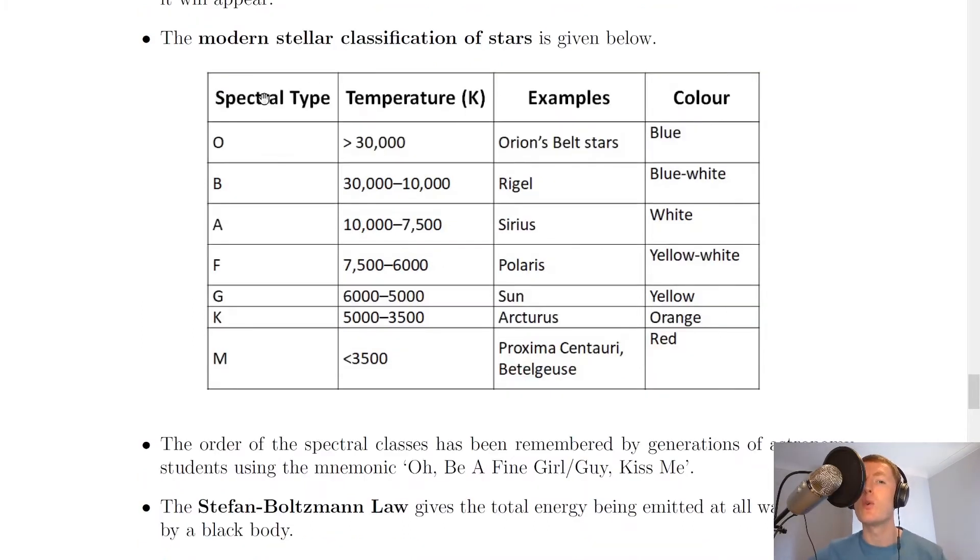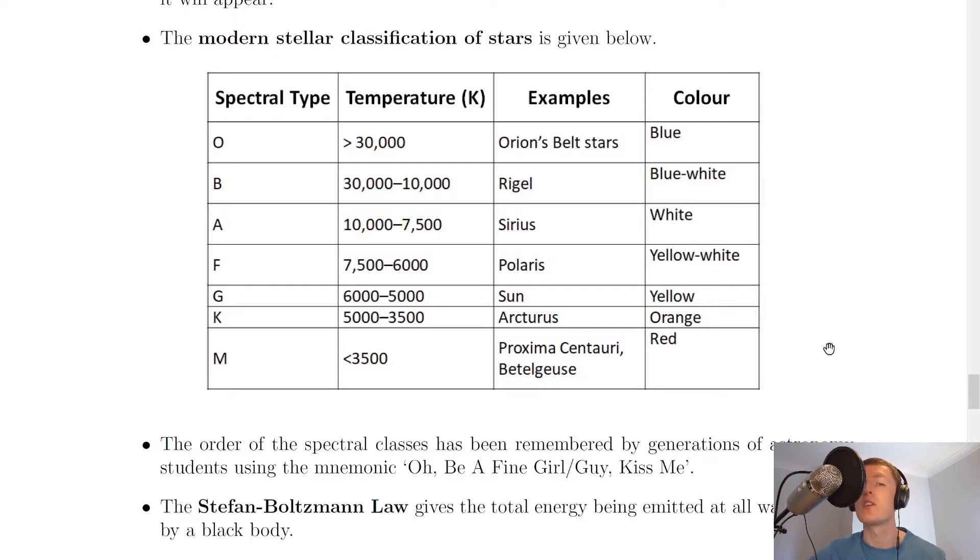You don't have to remember these spectrotypes and their certain temperature ranges but it is a good idea to remember that blue stars are hotter and red stars are cooler. However, if you do want to remember it, the order of the spectral classes has been remembered by generations of astronomy students using the mnemonic 'O be a fine girl or guy, kiss me.'